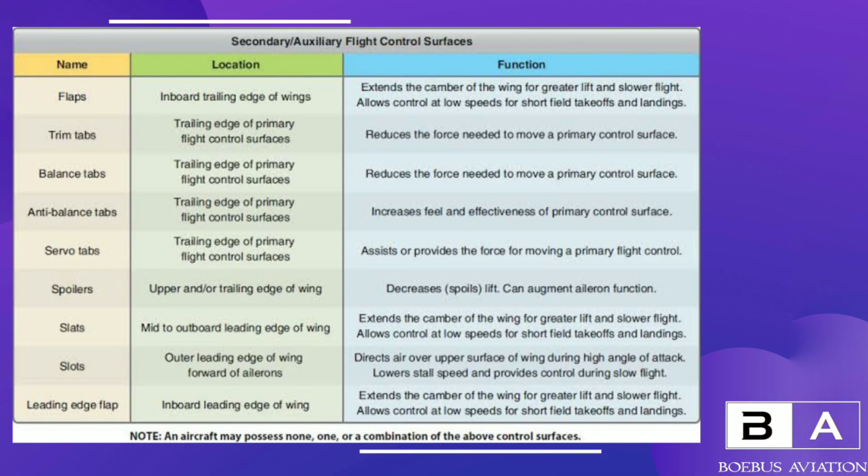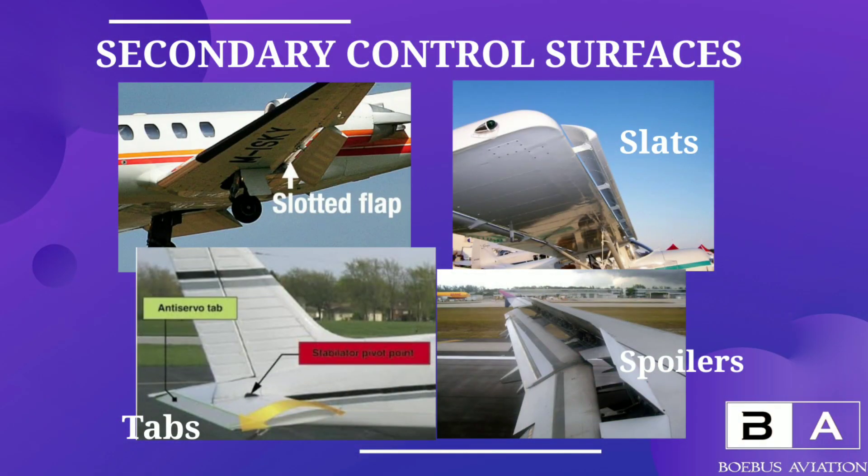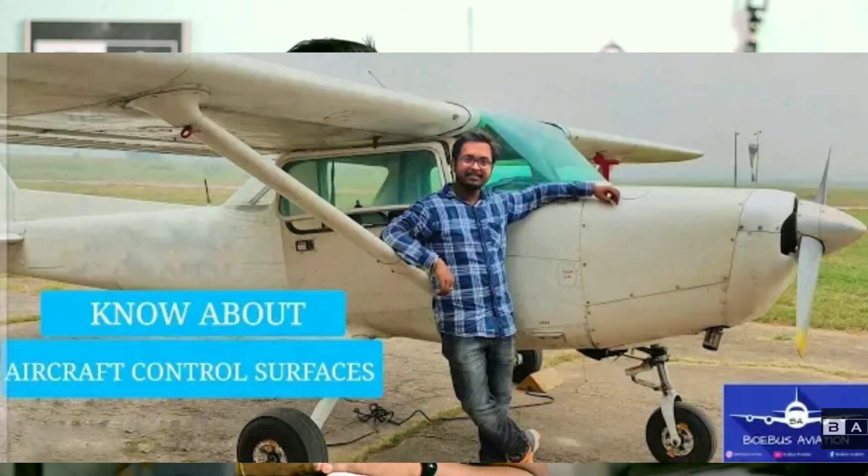After the primary control surfaces, there comes the secondary control surfaces which help in a more efficient performance of the aircraft. Flaps, tabs, slats, and spoilers all come under secondary control surfaces. I have also made a live demonstration in a Cessna 152 aircraft — you can watch that video, I will put the link in the description. These primary and secondary control surfaces are called the conventional ones.